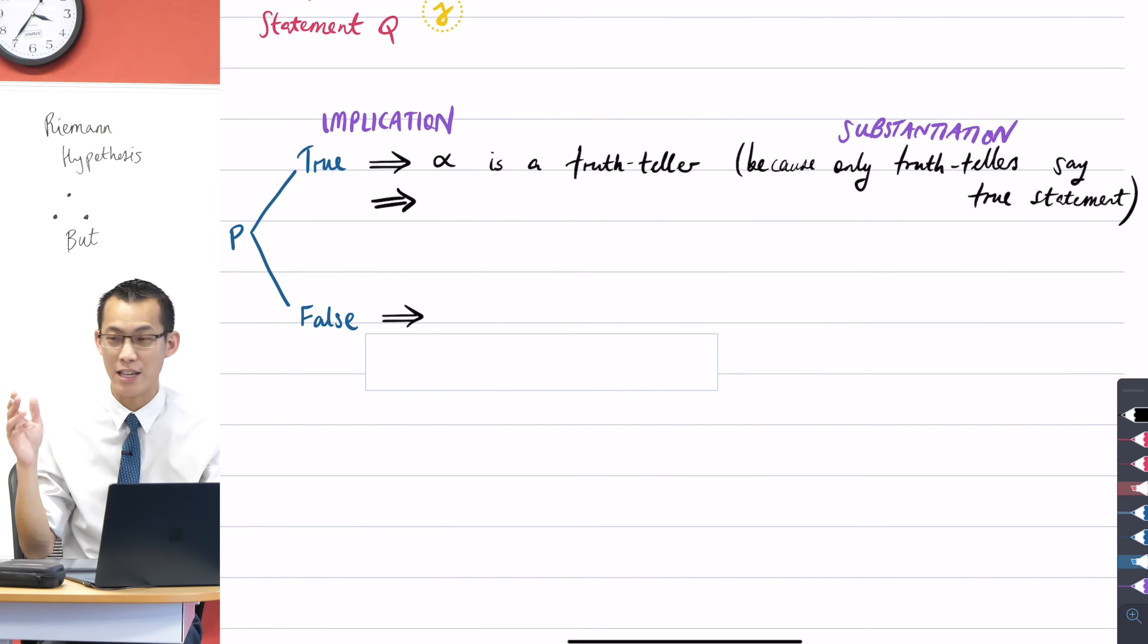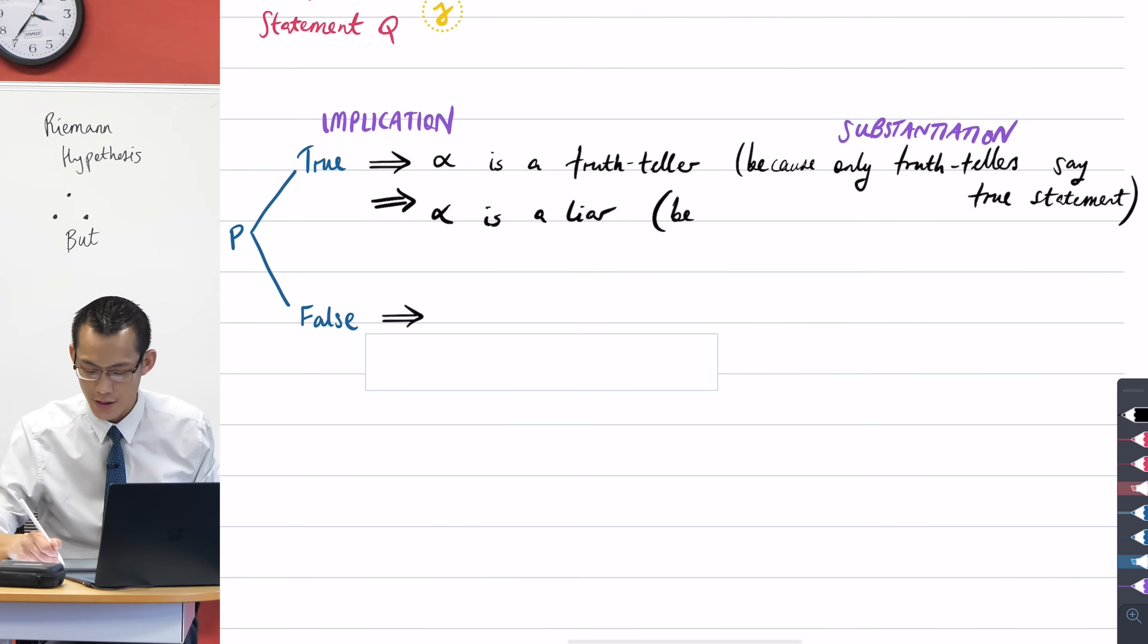So the other implication of this statement being true is that alpha is a liar, and my substantiation for that is the statement's content. The statement itself says something about itself, so this is my substantiation, because of the statement's content.